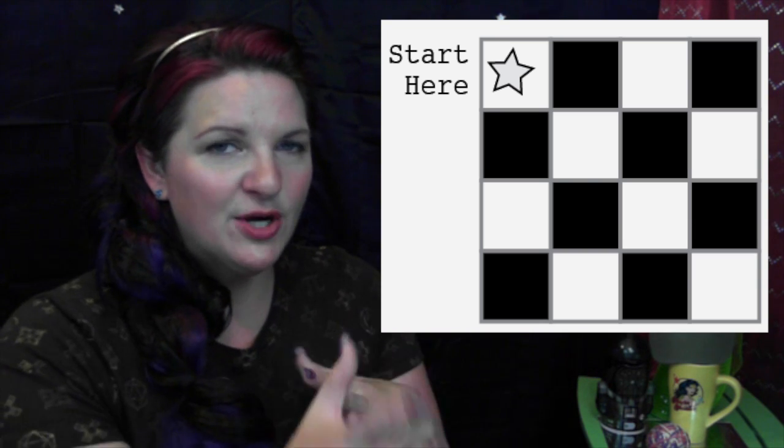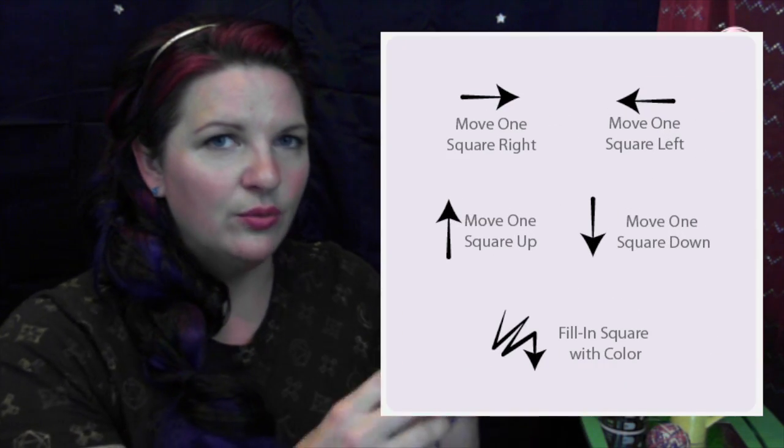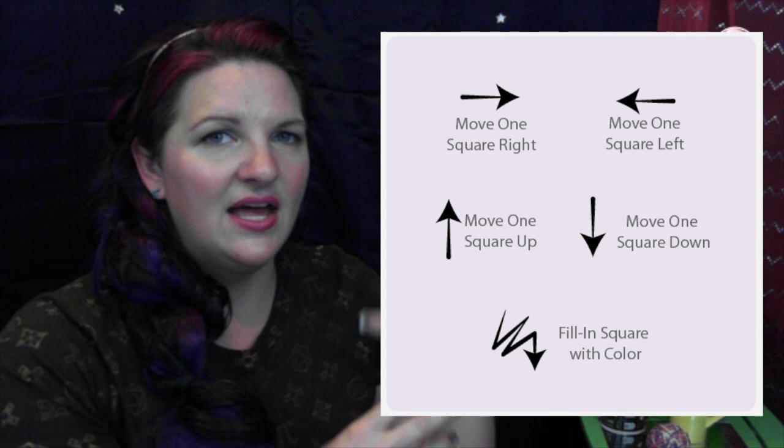Keep in mind that the partner is not allowed to see your image. Because we're not going to allow students to do this interactively, the student who has the image has to write the whole algorithm down before passing it to their partner. Since it would take forever to write out 'move one square right' every time, we give an arrow suggestion — arrows represent each of those steps.